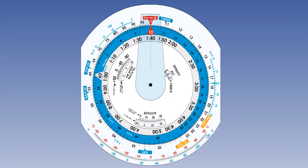To multiply one number by another, initially set the 10 index on the inner scale against the first number of the calculation on the outer scale. Next, locate the second number of the calculation on the inner scale and read off the answer opposite it on the outer scale. Remember that you'll need to make a rough estimate of the answer to establish where the decimal point will be.